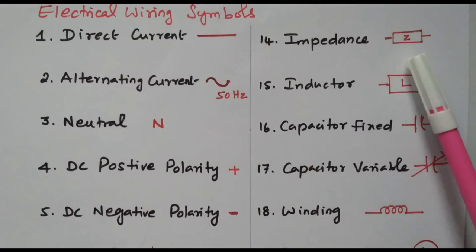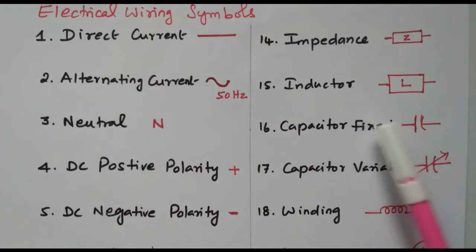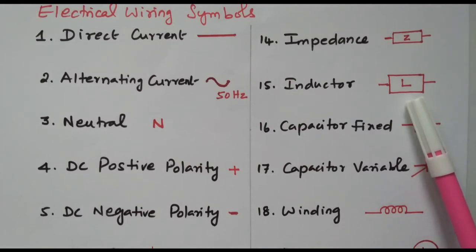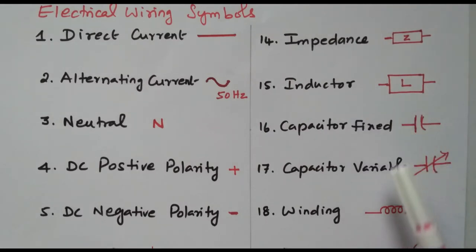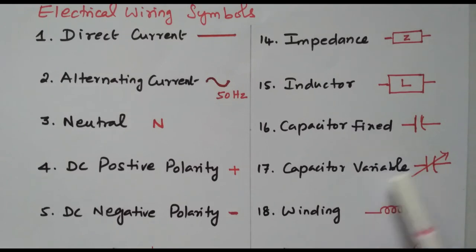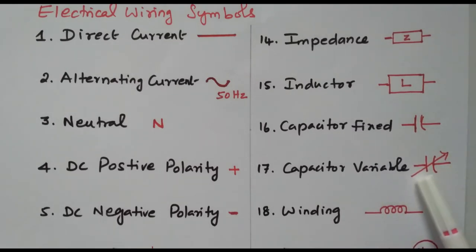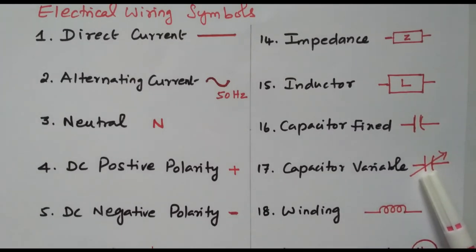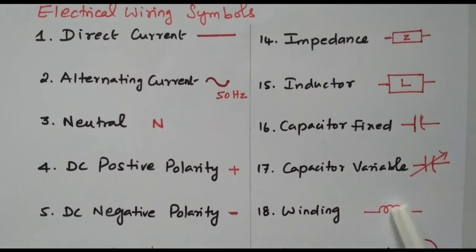Then impedance is represented within a box with Z, where Z stands for impedance. The inductor is represented by L within a box. Then we have fixed capacitor and variable capacitor — you know the standard capacitor symbol. If an arrow or R-O mark is added, it indicates a variable capacitor whose value can be varied. Then windings are represented like a coil — n number of coils is the symbol for winding.